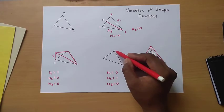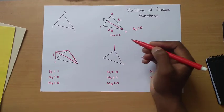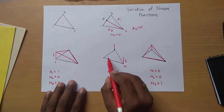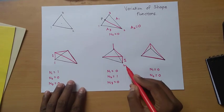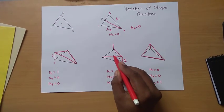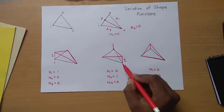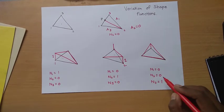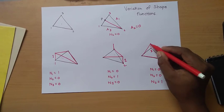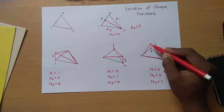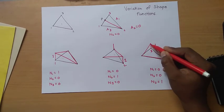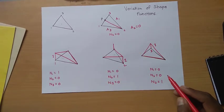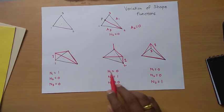For N2, the maximum value of the shape function is 1 at node 2. As you move away, it decreases to 0.5 in the middle and 0 at the opposite edge. At node 2, the other shape functions N1 and N3 will be 0 — that is a rule or property of shape functions. Similarly for N3, the maximum value is 1 at node 3 and it decreases toward the opposite edge. This is a linear variation because it is a simplex triangular element, so this is called linear variation of shape functions.